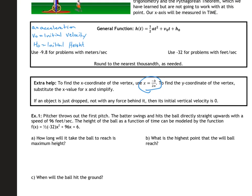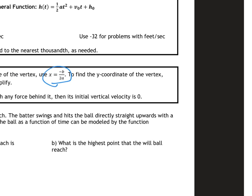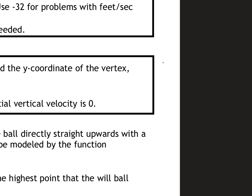To find the y-coordinate — how high it's going to go — you always plug in the x value. If you have an object that's either thrown or dropped, that's what our graph looks like. The vertex is at the top. The y-value is always your height and the x-value is always your time, so keep that in mind.